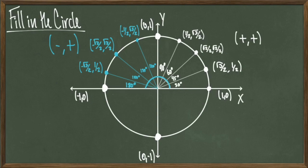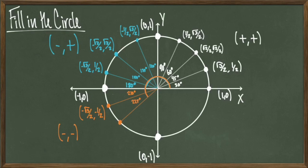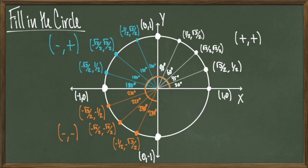Moving into the third quadrant, both x- and y-coordinates have to be negative, so I appeal to the first quadrant and flip points about both axes, changing the signs of both coordinates. At 210 degrees I get (-root 3 over 2, -1/2). At 225 degrees I get (-root 2 over 2, -root 2 over 2). At 240 degrees I get (-1/2, -root 3 over 2). And at 270 degrees I get (0, -1).